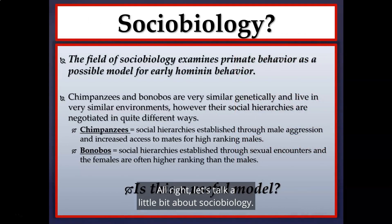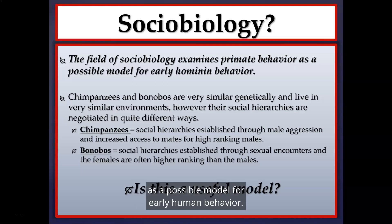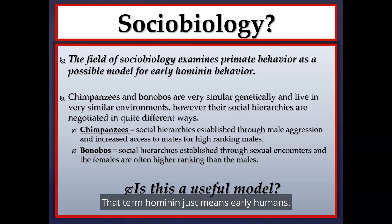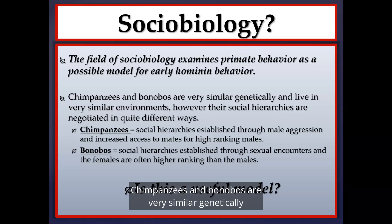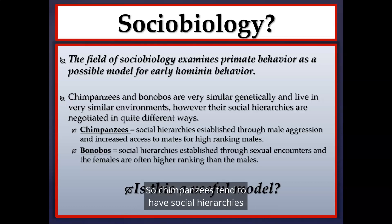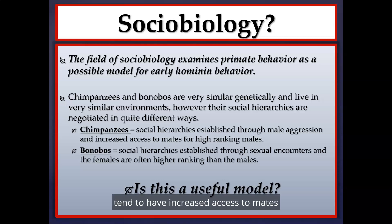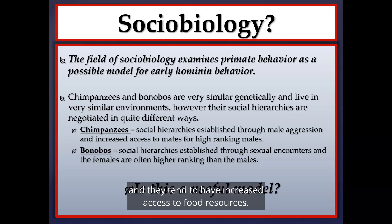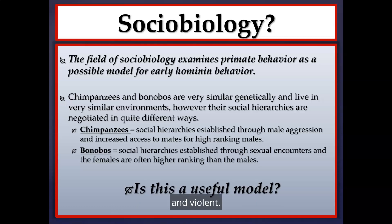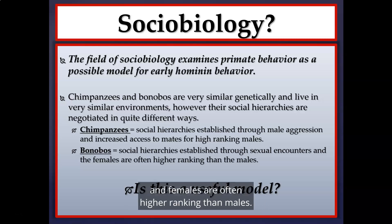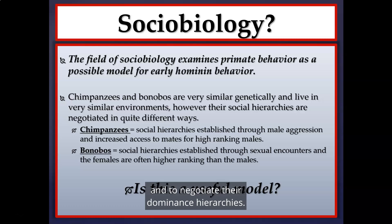Sociobiology examines non-human primate behavior as a possible model for early hominin behavior. Chimpanzees and bonobos are very similar genetically and live in very similar environments, yet their social hierarchies are negotiated quite differently. Chimpanzees tend to have social hierarchies established through male aggression and dominance, with high-ranking males having increased access to mates and food. Bonobos, by contrast, establish hierarchies through sexual encounters, with females often higher-ranking than males, using sex to mitigate tensions.